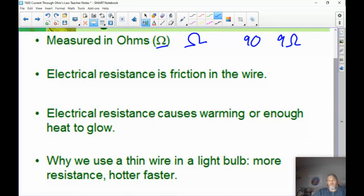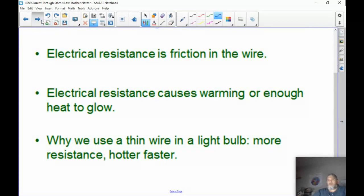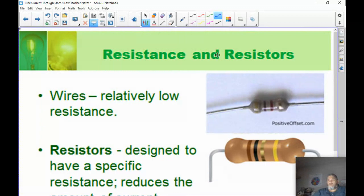That's why we use a thin wire for a light bulb. The filament inside there is so small that it gets hot real fast, so it glows and creates light.